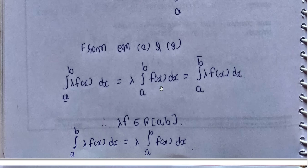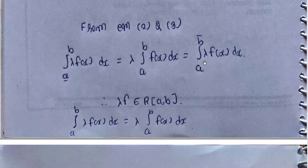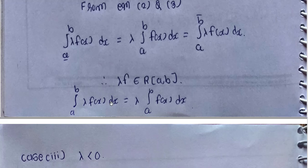From equations two and three, the upper Riemann integral and lower Riemann integral of λf are equal. Therefore, by definition one, λf is Riemann integrable over closed interval [a,b], meaning λf belongs to R[a,b]. Also, the integral from a to b of λf(x) dx equals λ times the integral from a to b of f(x) dx.